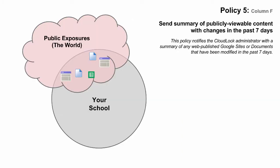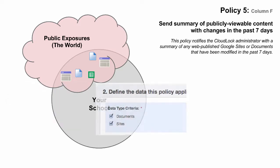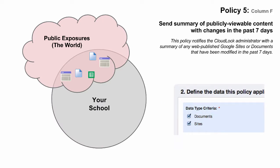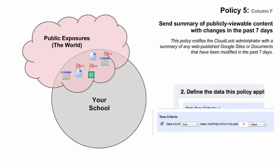The fifth policy is the first of two policies that focus on both Google documents and sites. This policy uses a time criteria to flag only documents that have been modified within a particular window, and sends a daily notification email to the CloudLock administrator with a summary report of web-published documents or sites that have been modified in the last seven days. This allows you as a school leader to keep tabs on your school's web presence and to ensure that content on any public or parent-facing Google site is regularly updated.